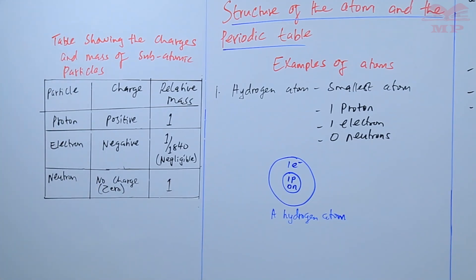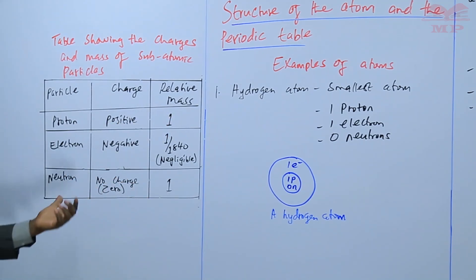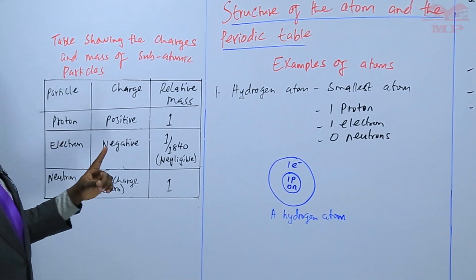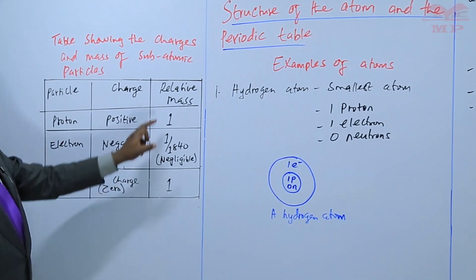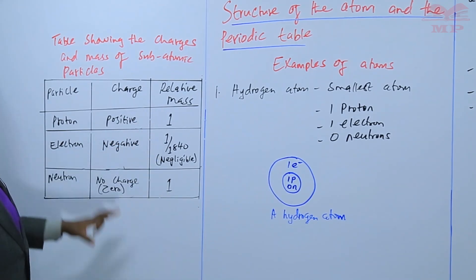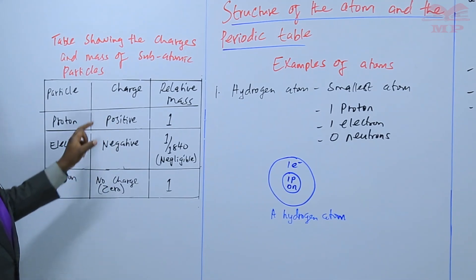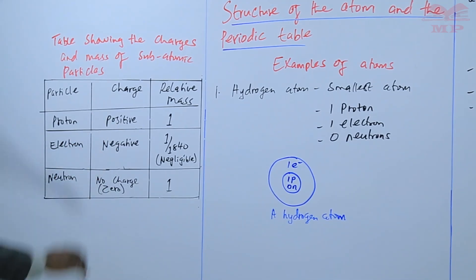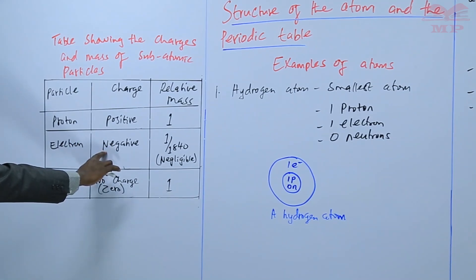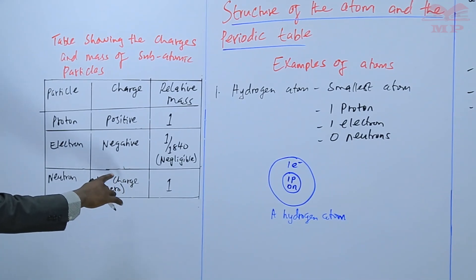By looking at this table, we can say that the proton and the neutron are the ones that contribute to the masses, because they are the ones that have a relative mass of one. But the proton and the electron have charges — they are the ones that contribute to the charges of an atom. A proton is positive, an electron is negative, and a neutron has no charge — it is neither positive nor negative.